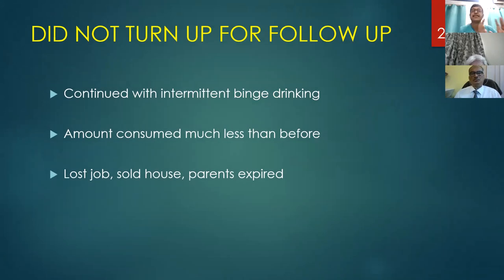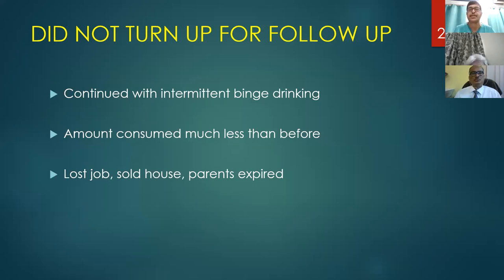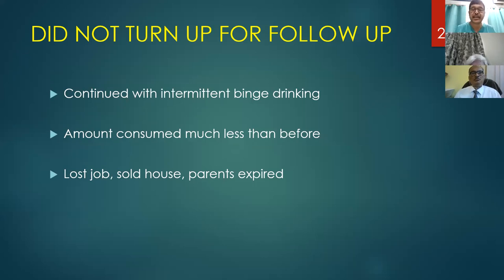This patient had a discriminant function of 28, calculated from INR, prothrombin time, and bilirubin. Because it was less than 32, we treated him with supportive measures and nutritional care and the patient went home. However, the patient did not turn up for follow-up, as is usual practice with most alcoholic liver disease patients. At home, the patient continued intermittent binge drinking, though the amount consumed was less than before.